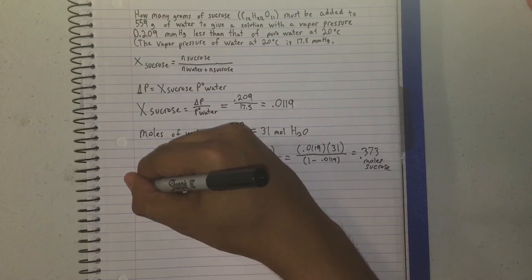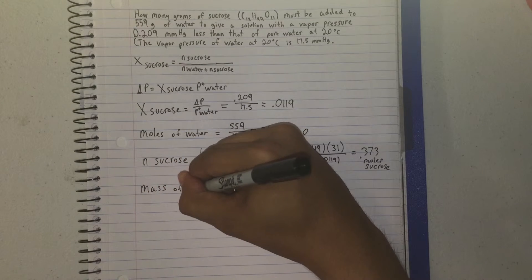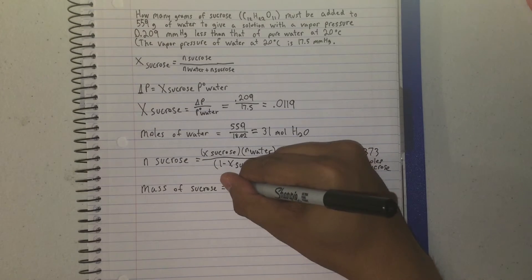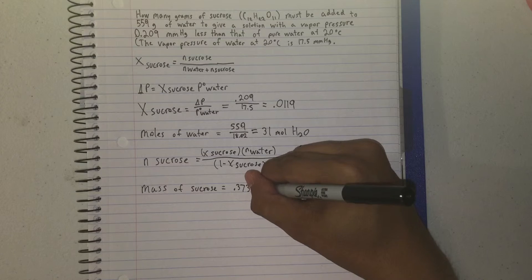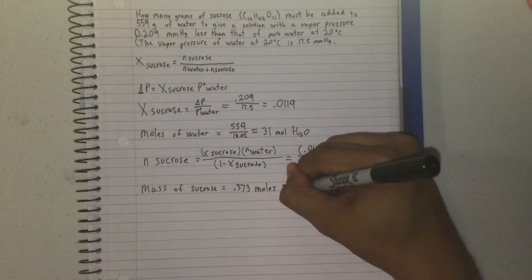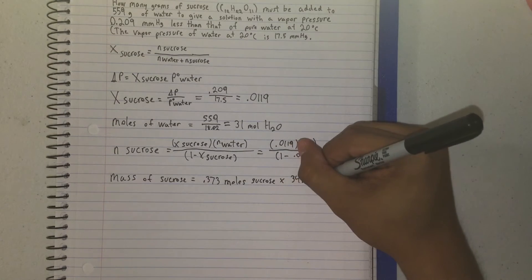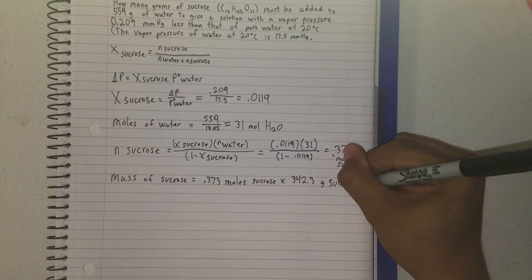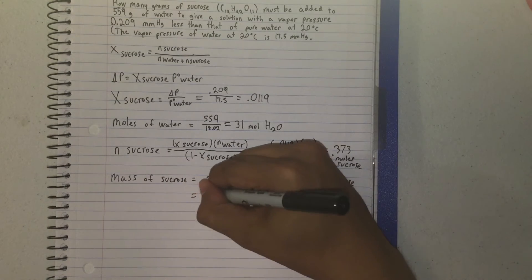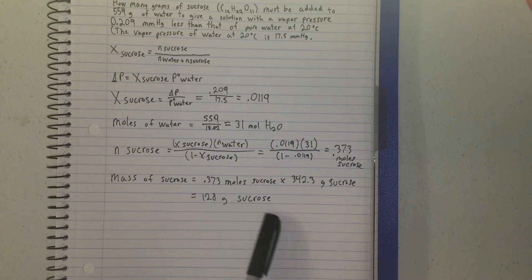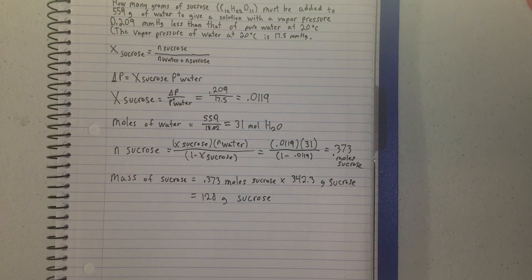The mass of sucrose is found by multiplying 0.373 moles of sucrose by the molar mass of sucrose, which gives a final mass of 128 grams of sucrose. This is how much sucrose you need to add to 559 grams of water to give a solution with a vapor pressure 0.209 mmHg less than that of pure water at 20°C. That's your answer.